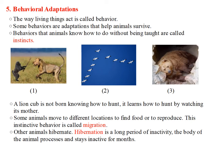But animals also have to learn other types of behaviors. We call them learned behaviors. For example, a lion cub is not born knowing how to hunt. It learns how to hunt by watching its mother. Some animals move to different locations to find food or to reproduce. This behavior is called migration, and it is an instinctive behavior, so animals do not have to be taught how to do it.